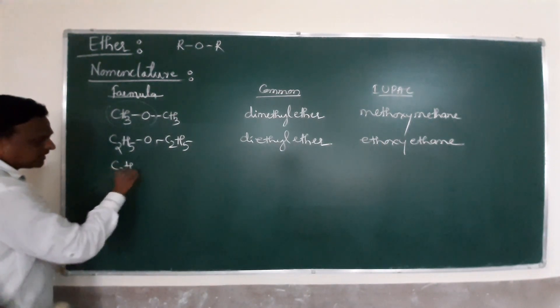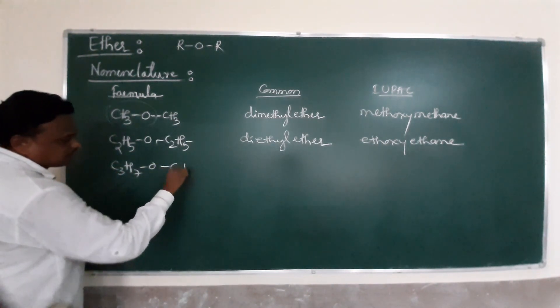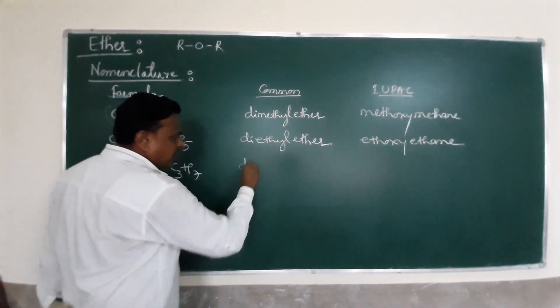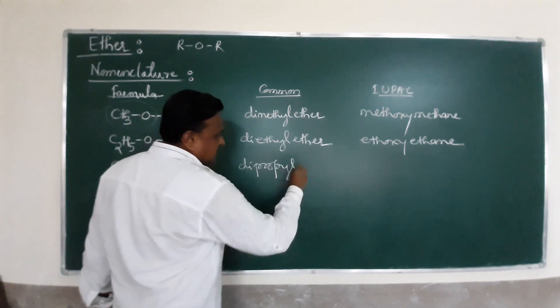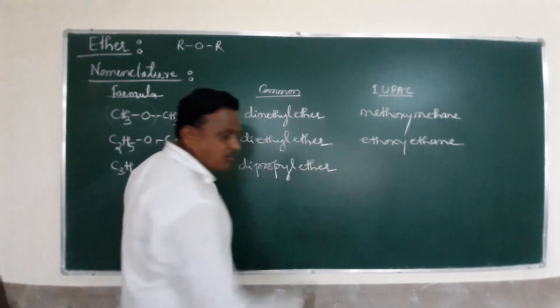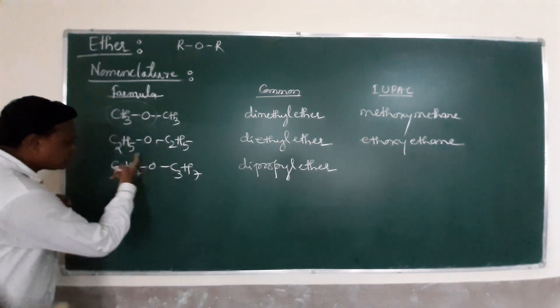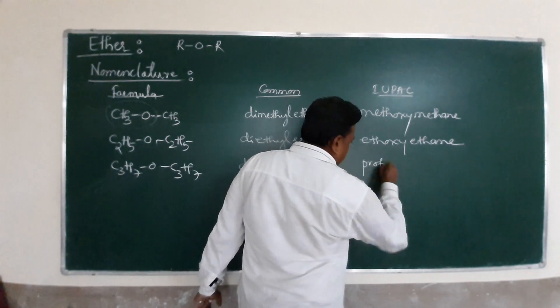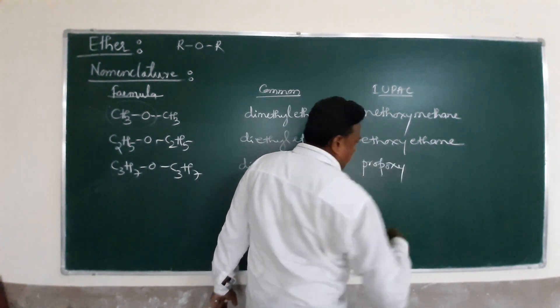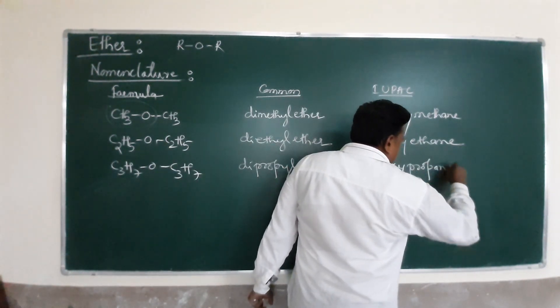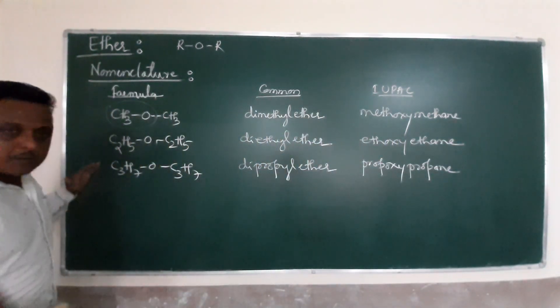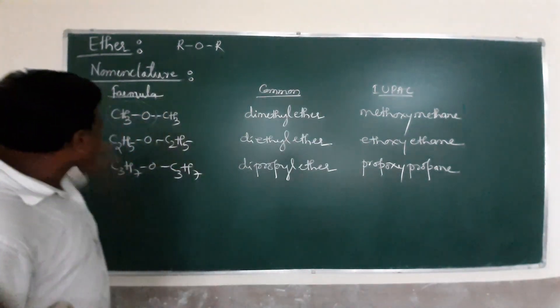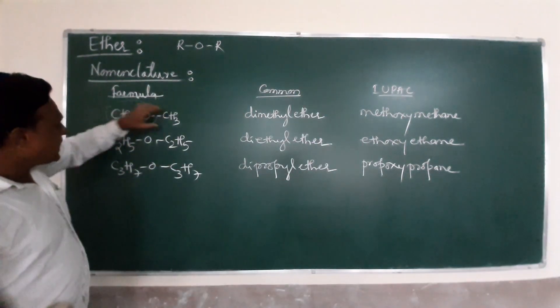Another example: C3H7-O-C3H7. Both are propyl groups, so we call it dipropyl ether. The IUPAC name is propoxy propane. These are three best examples of simple ethers with common name dialkyl and IUPAC as alkoxy-alkane.